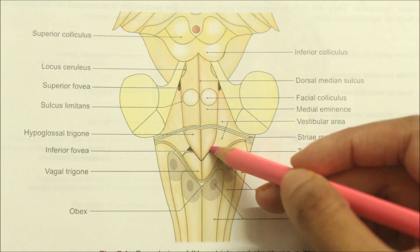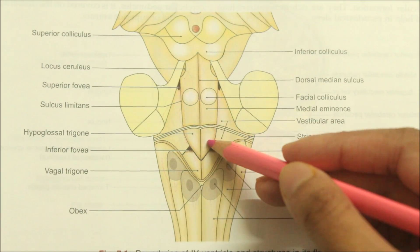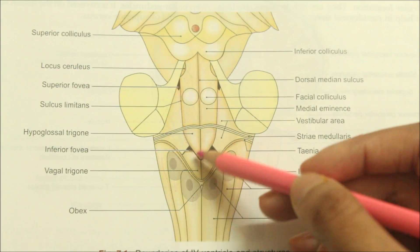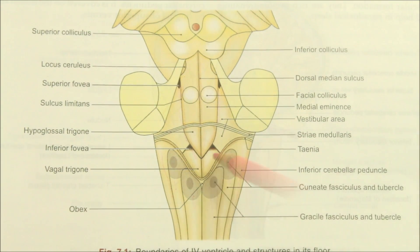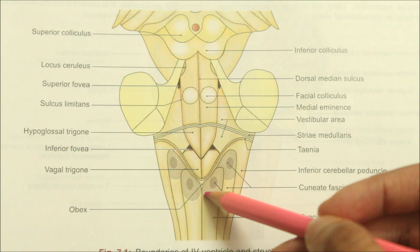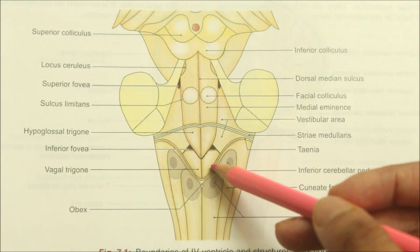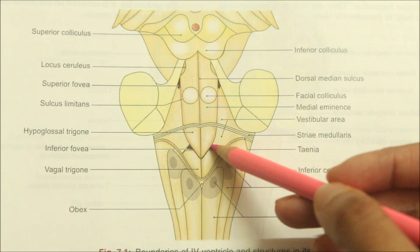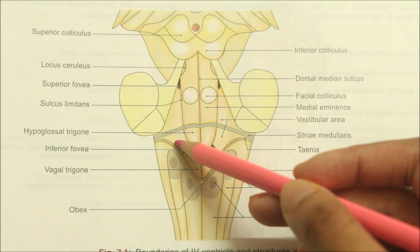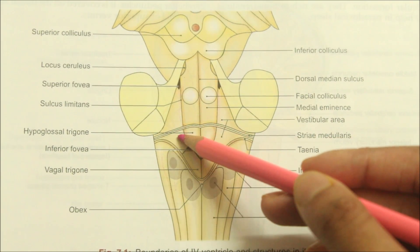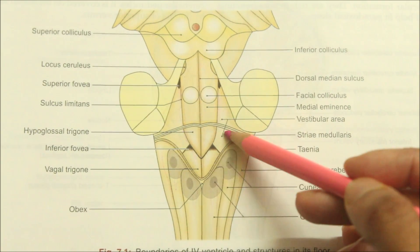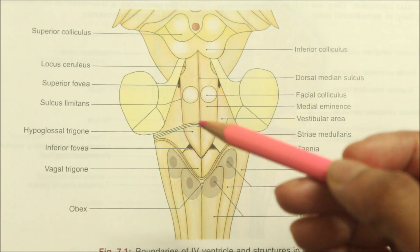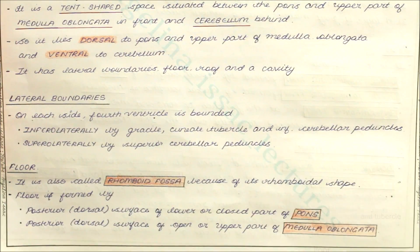A sulcus descends from the inferior fovea and runs obliquely towards the midline. This sulcus divides the median eminence into two triangles: the hypoglossal triangle medially and the vagal triangle laterally. Between the vagal triangle above and the gracile tubercle below, there lies a small area called the area postrema, which may function as a chemoreceptor. The lowest part of the floor resembles the pointed nib of a writing pen and is described as the calamus scriptorius.